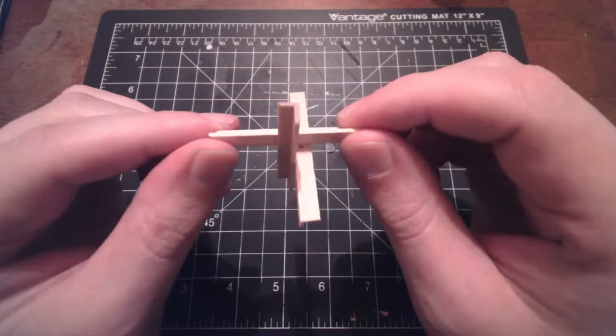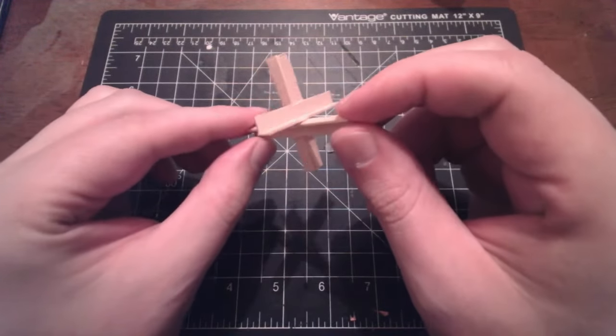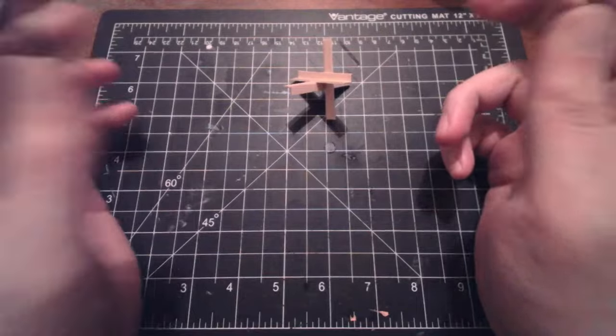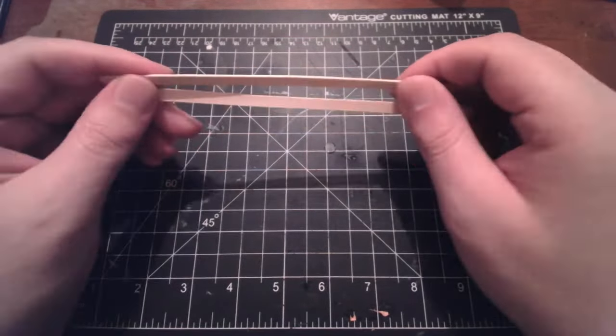Grab some coffee stir sticks because, as you can see, that's the main thing we're making them out of and this is exactly what we're building. Two of these will make one tank trap, also known as Czech Hedgehogs.